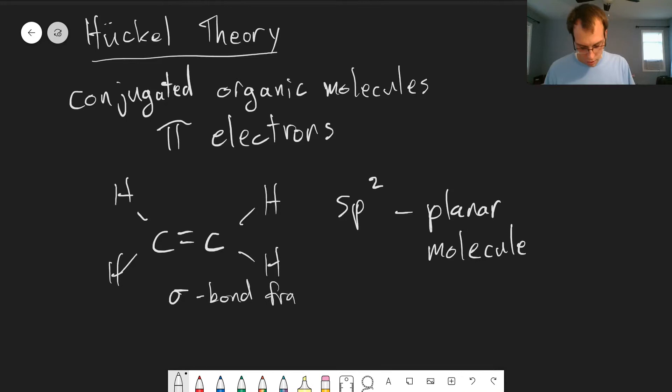If there's sp2 hybridization, the sp2 hybrid orbitals are going to be forming the sigma bond framework. And that leaves behind one p orbital that's not part of this hybridization scheme. So if I take our molecule and kind of draw it on its side, we'll have our p orbitals that point up and down that are not part of the hybrid scheme. And this forms our pi electron system. And these are the electrons we're looking at in Huckel theory.